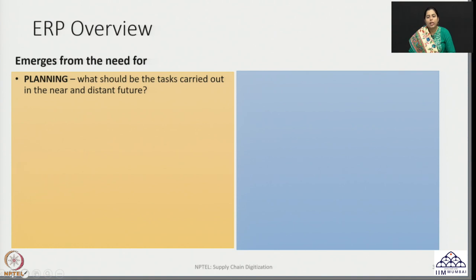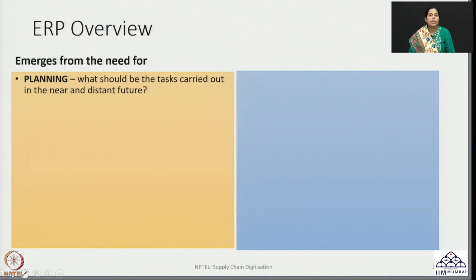If we have to carry out activities within a supply chain, we need to have a proper plan. Otherwise, our supply chain is going to work in a very haphazard manner. One of the foremost things to understand is that the key to good supply chain management starts from planning. Any business has to look at planning activities with a lot of due diligence and focus. We need to identify what kind of tasks need to be carried out in the near as well as in the distant future.